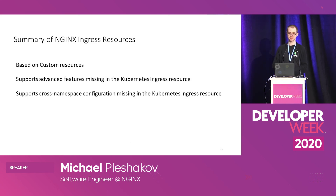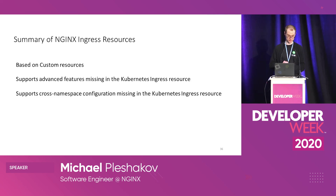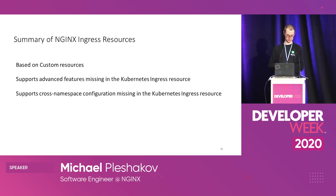To summarize the NGINX ingress resources: they are based on custom resources, which is a Kubernetes feature that allows you to add new resource types to the cluster on the fly. Our NGINX ingress resources support advanced features missing in the standard ingress resource, such as advanced routing rules and advanced customization options. We also provide better support for cross-namespace configuration.